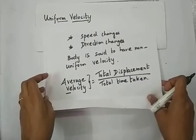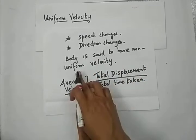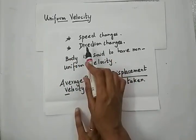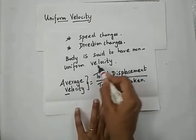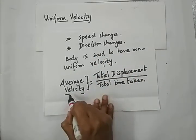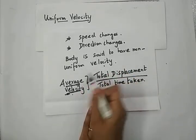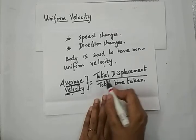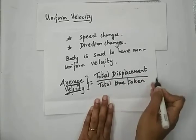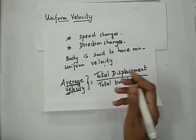On road, a body cannot maintain the same speed, and the direction is also subject to change. If the speed changes and the direction changes, the body is said to have non-uniform velocity. So for an object moving with a varied or non-uniform velocity, we calculate the average velocity. Average velocity is given by the formula: total displacement of the moving body from the initial to the final position divided by the total time taken.